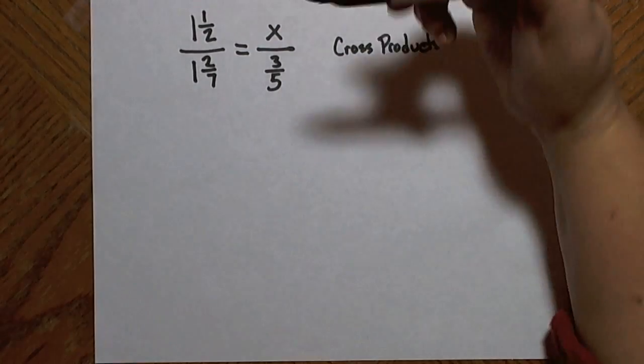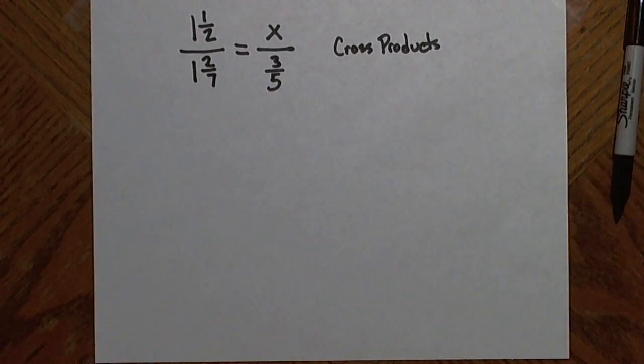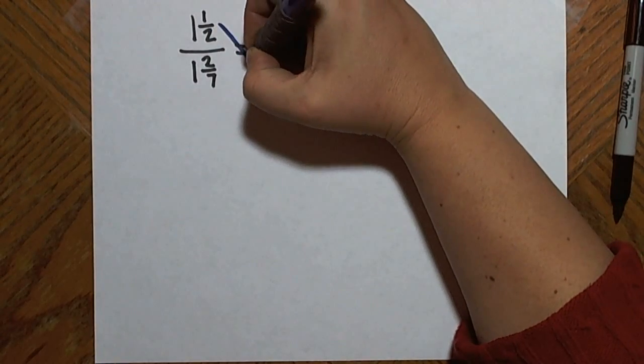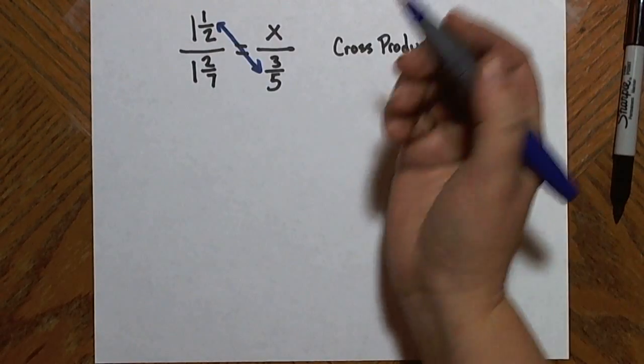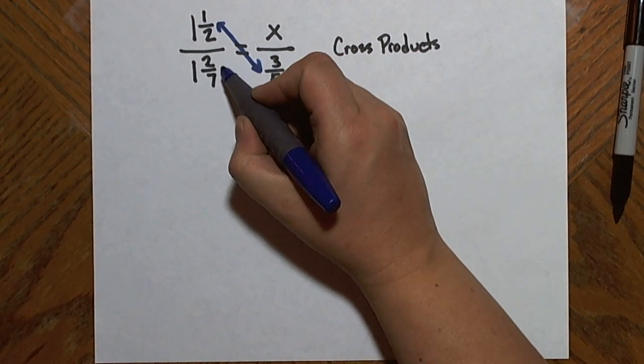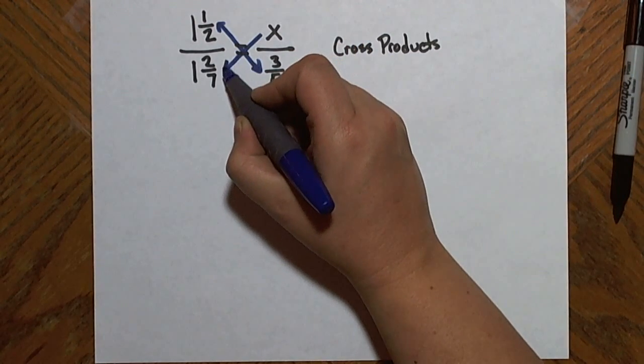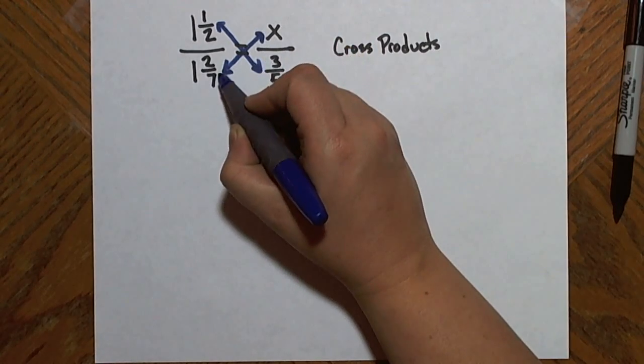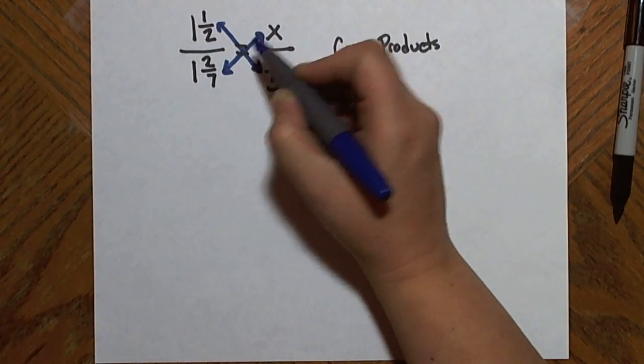So if these two fractions are equal, the product I get by multiplying the numerator of one times the denominator of the other is going to be equal to the product I get by multiplying the numerator of the other with the denominator. That's diagonally across the equal sign.